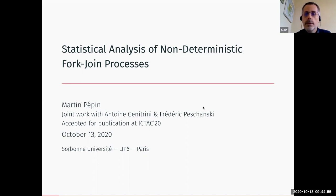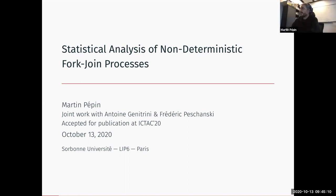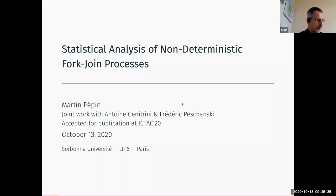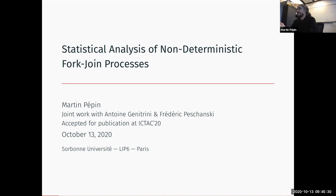Hello everybody. It's the second day of CLA and we are happy to listen to Martin Pepin about statistical analysis of non-deterministic fork-join processes. Thank you. Good morning or good afternoon, whenever you are. My name is Martin Pepin. I'm a PhD student at Sorbonne University in Paris. I work with Antoine Genitrini and Patrick Pichonsky. Today I'm going to talk about concurrency and statistical analysis of non-deterministic fork-join processes.